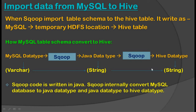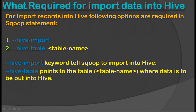As we know, Sqoop code is written in Java. Sqoop internally converts MySQL data types to Java data types, and Java data types to Hive data types. Sqoop handles these conversions internally — we do not need to worry about them.